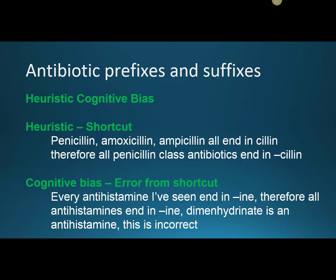A heuristic is a shortcut. Someone who is making these note cards says, well, I saw penicillin, amoxicillin, ampicillin — they all end in CILLIN — therefore all penicillin class antibiotics end in CILLIN. We don't really teach logic anymore, and anyone going to college probably would take ethics instead of formal logic. So these errors have their names in formal logic, but I'm just going to explain the issue. They found that CILLIN was a shortcut for penicillins, so they said they can make shortcuts for other drug classes — and that's where the cognitive bias comes in. The cognitive bias is the error from the shortcut.